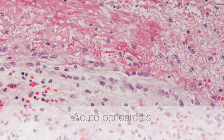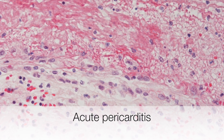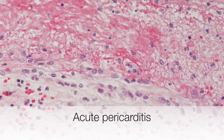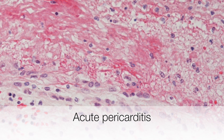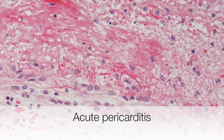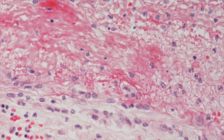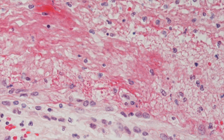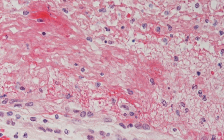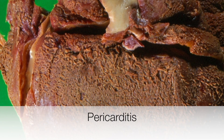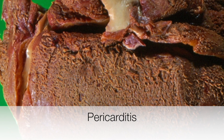This is an example of acute pericarditis. To orientate you, the bottom of the picture is the surface of the heart, and the top of the picture has a red streaky appearance, which is a fibrinous exudate containing inflammatory cells. This is a typical example of the gross appearance of pericarditis.